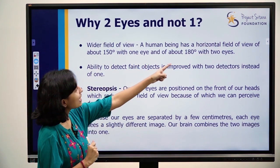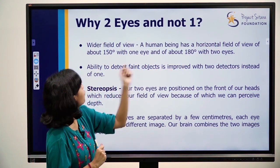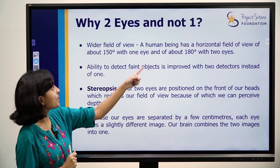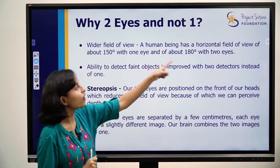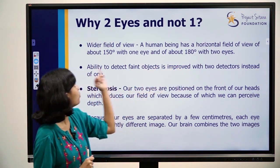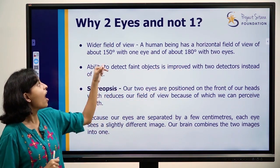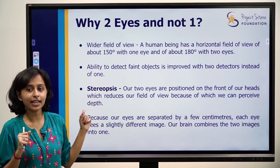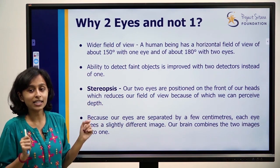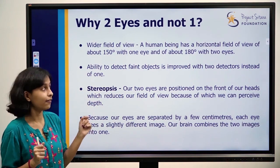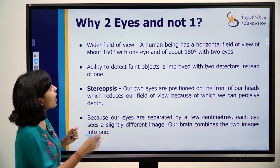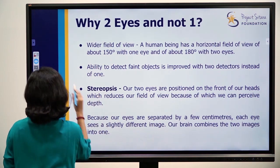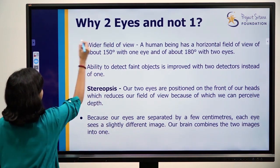We have increased field of view. A human being has a horizontal field of view of about 150 degrees. You can start the same way as degrees and angles. 180 degrees is a straight line.